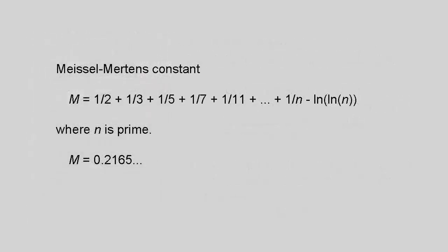There's a similar constant to gamma that applies specifically to prime numbers. It's called the Meisel-Merten's constant M. M equals 1 over 2 plus 1 over 3 plus 1 over 5 plus 1 over 7 plus 1 over 11 etc plus 1 over n minus the natural log of the natural log of n.